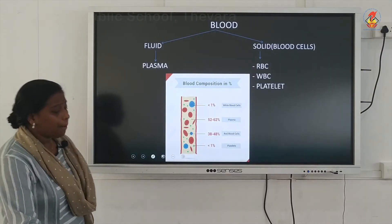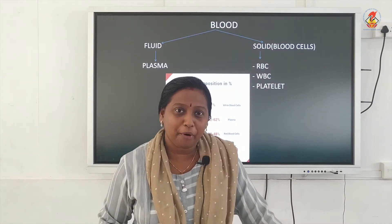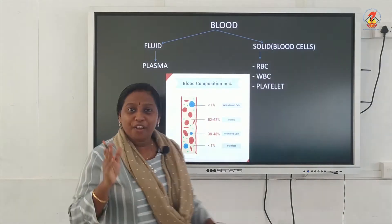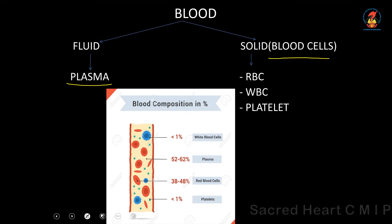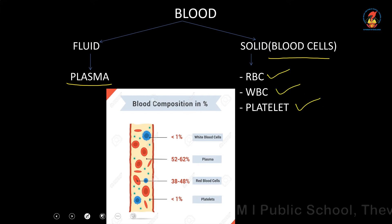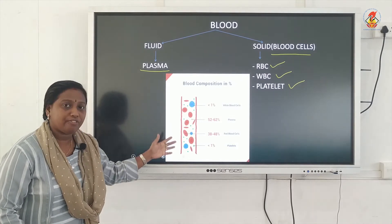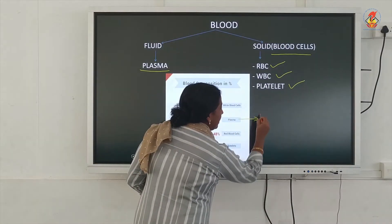Now we will study about the composition of blood — what does blood contain, what is blood made up of? Blood actually has two parts: a fluid part and a solid part. The fluid part of your blood is called blood plasma. The solid part is called blood cells, and there are three different types of blood cells: RBCs, WBCs, and platelets. Looking at the diagram, the percentage of different components in blood is shown. Plasma makes up 52 to 62 percent of your blood.